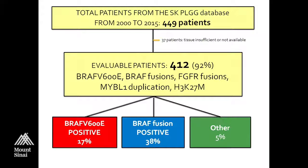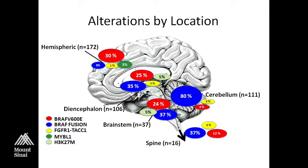Breaking that down by location, there are some interesting patterns. If you have a low-grade glioma in the cerebellum, there's an 80% chance it will harbor a BRAF fusion. In the hemispheres, a third will actually have the V600E mutation and the fusion is much less frequent. In the midline, it's about a quarter with the mutation and about a third with the fusion, and we also start to pick up the H3K27M mutation in low-grade gliomas in that location.